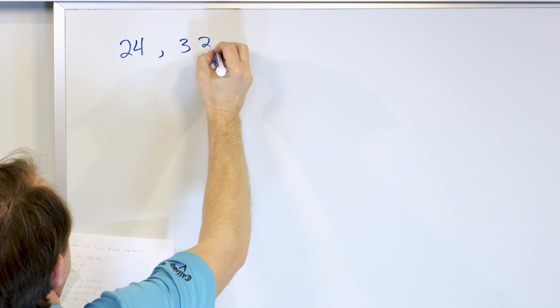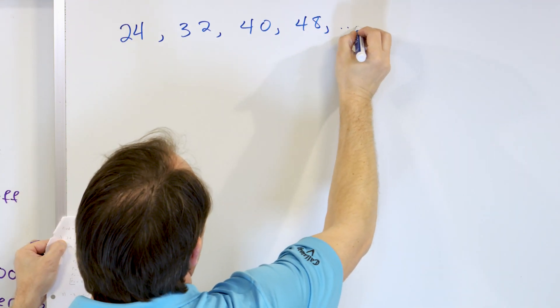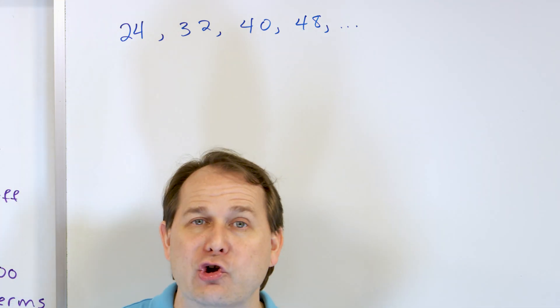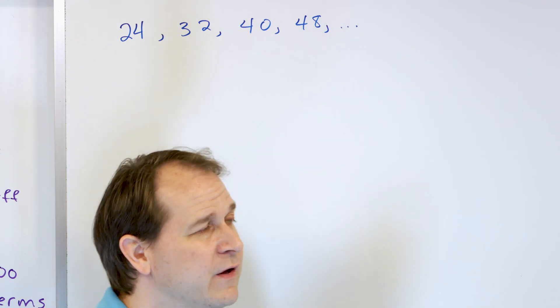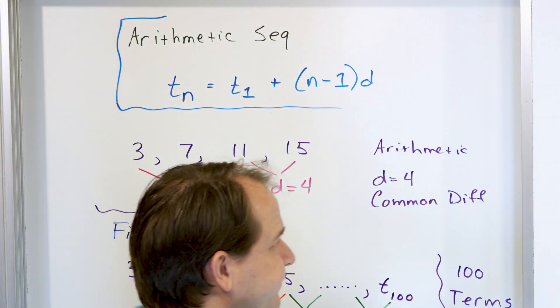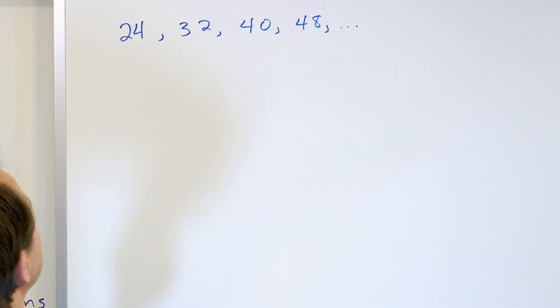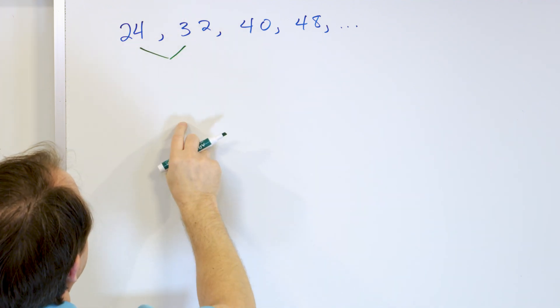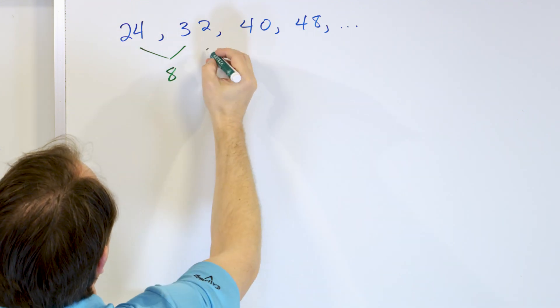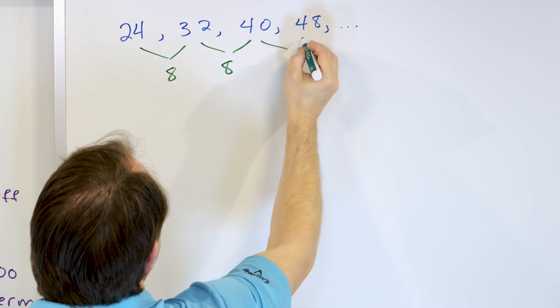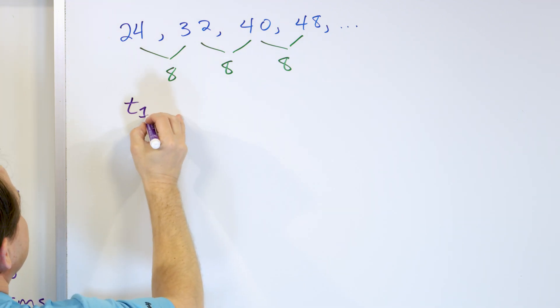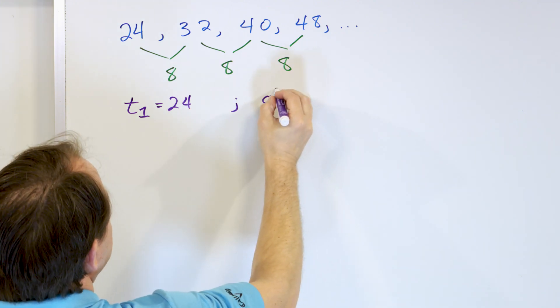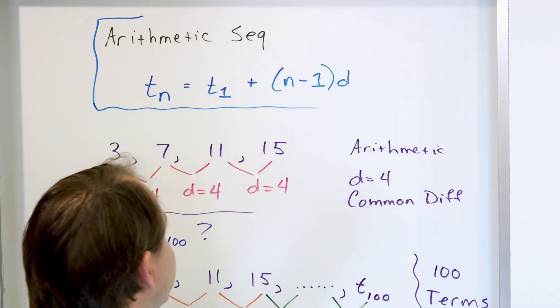Here's a sequence: 24, 32, 40, 48, and it goes on. Find an equation for the nth term that would allow you to predict any term down the road. First, find the common difference. 32 minus 24 is 8. 40 minus 32 is again 8. 48 minus 40 is again 8. So it's obviously an arithmetic sequence with common difference 8. Write down that T sub 1 is 24 and d is 8.